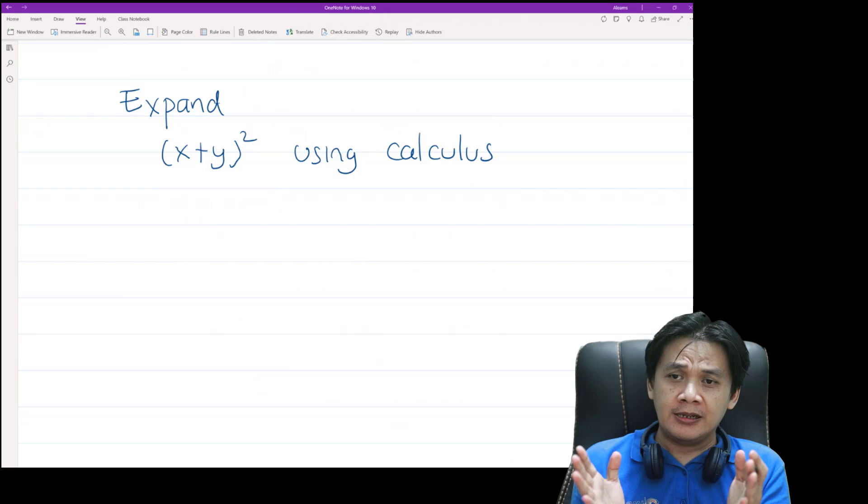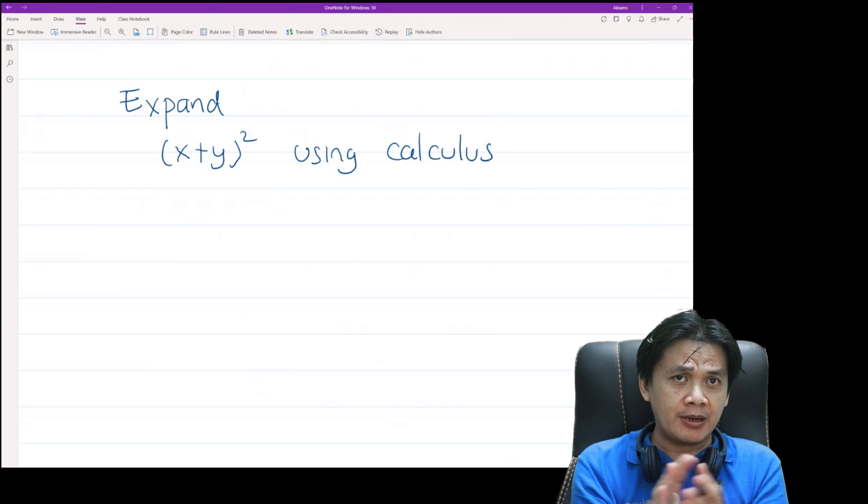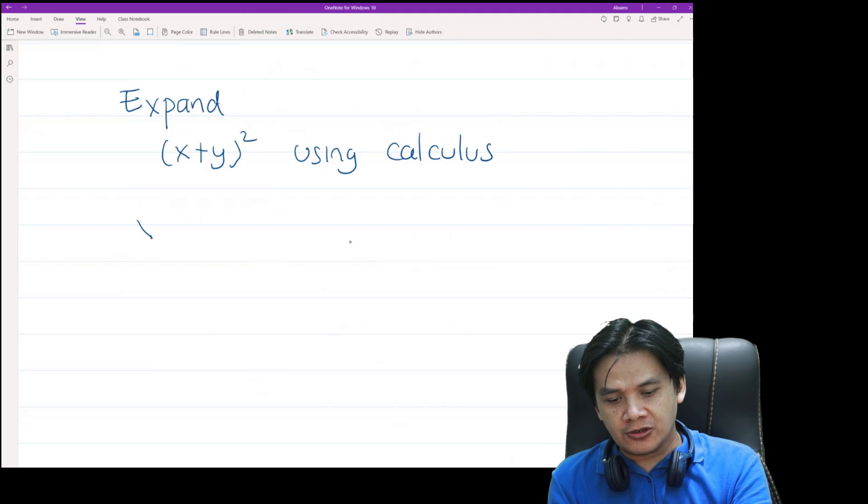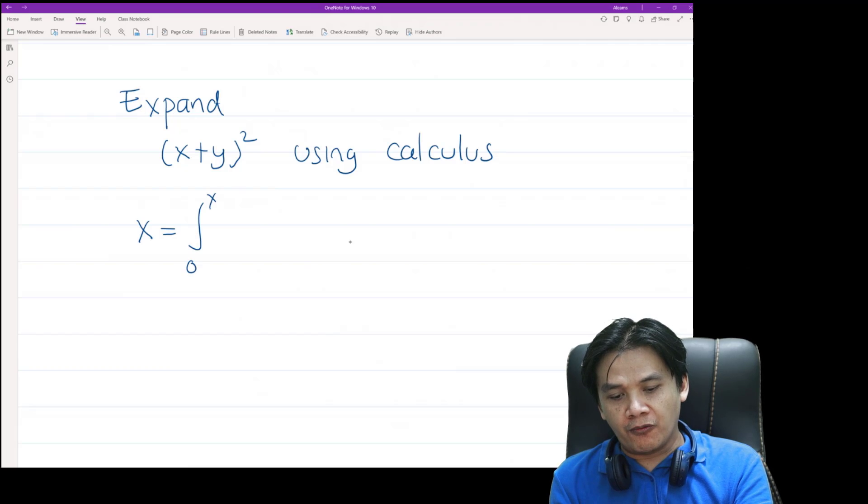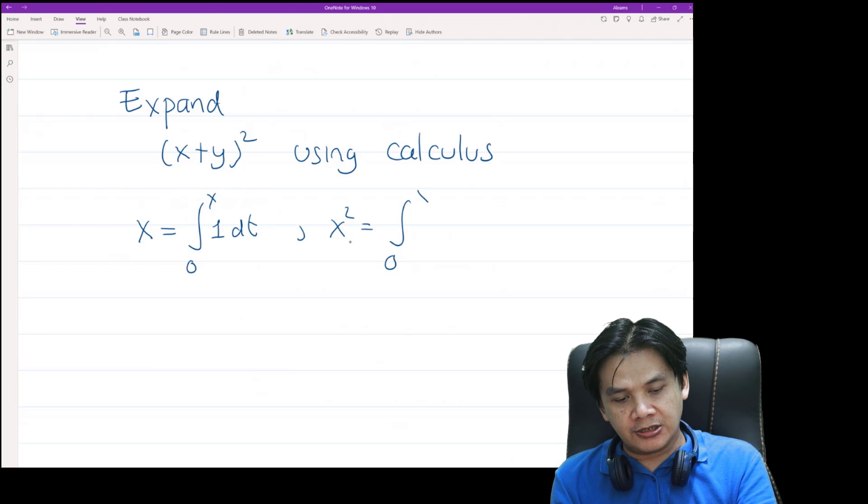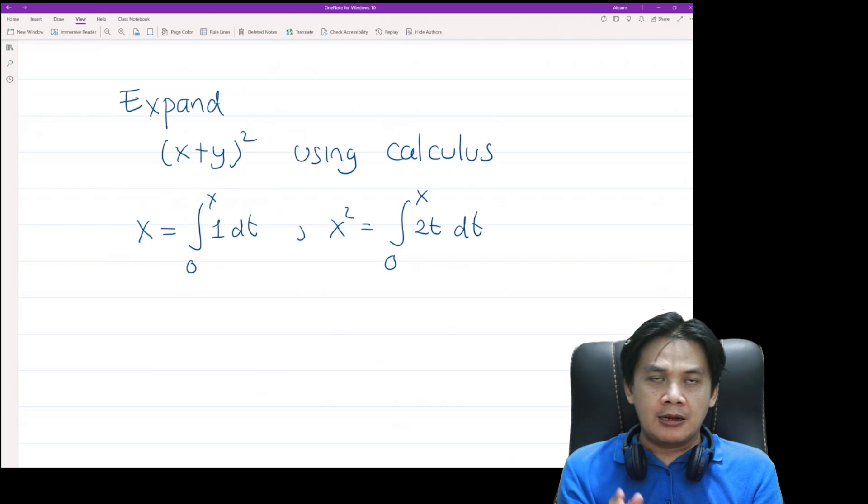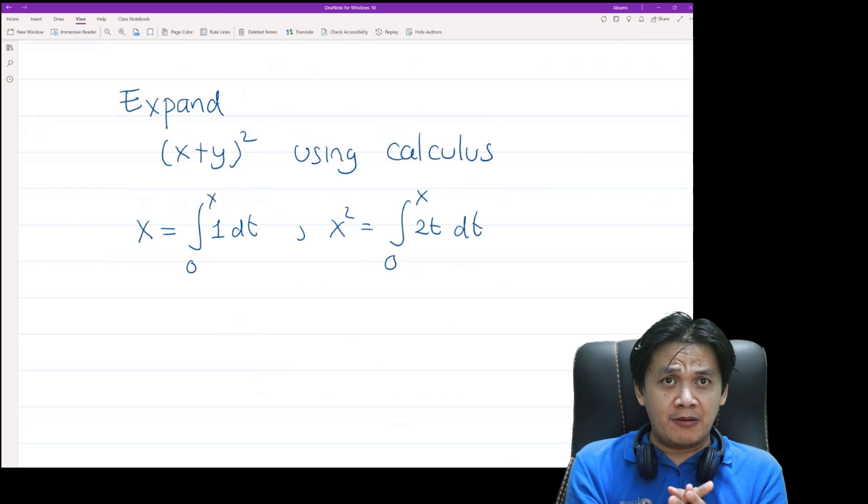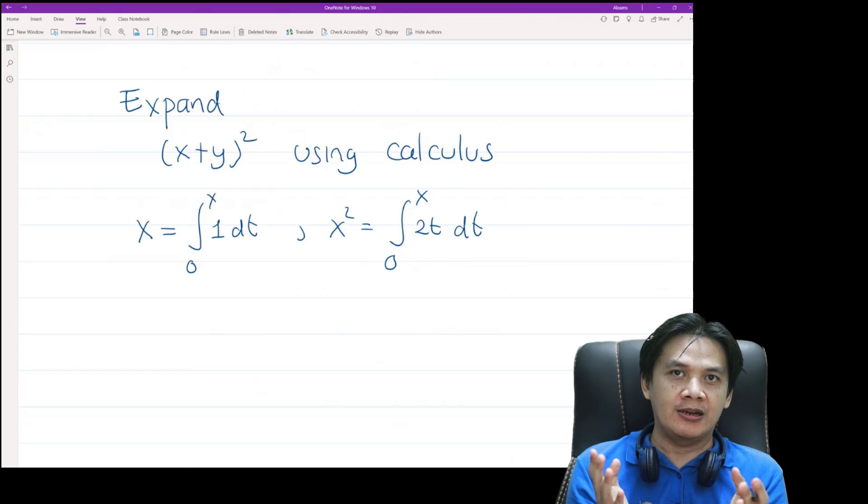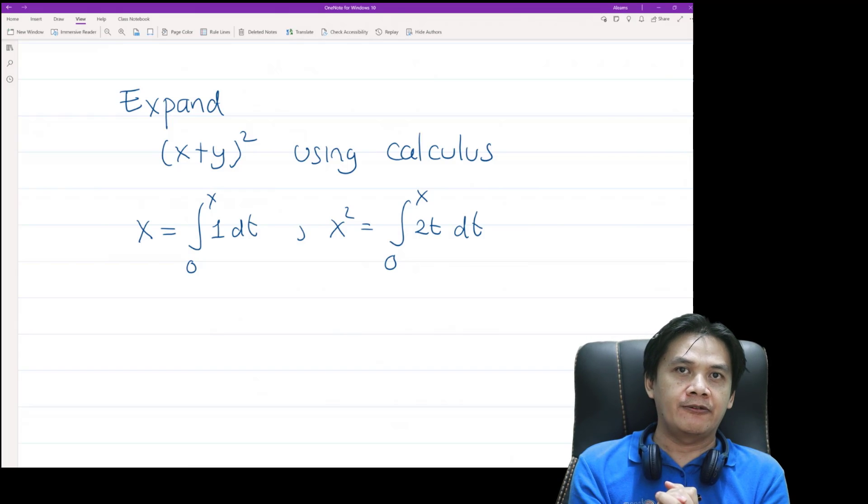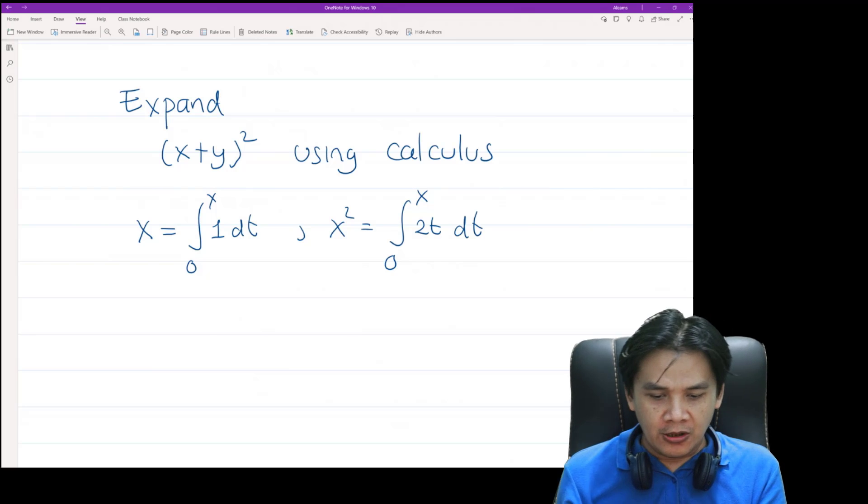So again we tried to prove the expansion of x plus y squared by using calculus. So black pen red pen gives us a hint. He defined x as the integral from 0 to x of 1 dt, and then x squared is the integral from 0 to x of 2t dt. I don't know whether my proof is okay or not, so you will be the judge to see whether it is alright. So without further ado, let's get started.